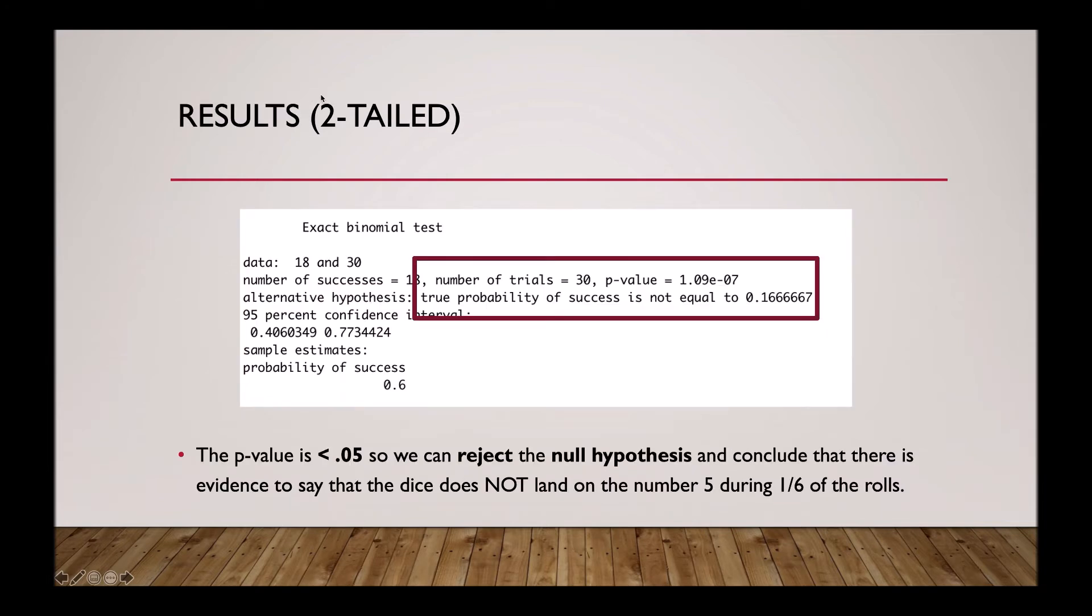And here are the results. As you can see, the p-value is less than 0.05, so we can reject the null hypothesis and conclude that there is evidence to say that the dice does not land on the number 5 during one out of six of the rolls.